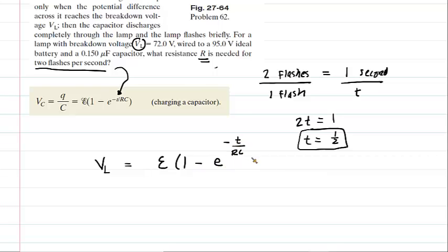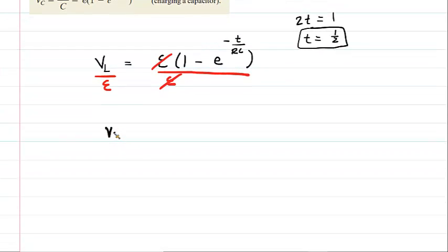And again, we're going to try to solve this for the resistance. And then to do that, we can actually begin by dividing both sides of the equation by the EMF of the battery. That will cancel it out on the right-hand side. And now we have the potential across the capacitor divided by the EMF is equal to one minus that exponential term.